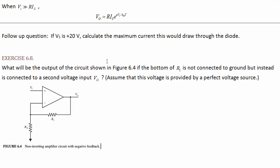Exercise 6.8. What will be the output of the circuit shown in figure 6.4, our standard op-amp non-inverting amplifier, if the bottom of R2, instead of being connected to ground, is connected to a second input, VI2? We can use the standard analysis stuff we've got for op-amps.